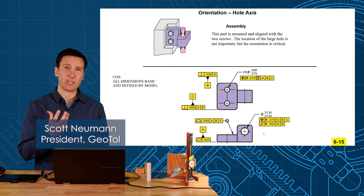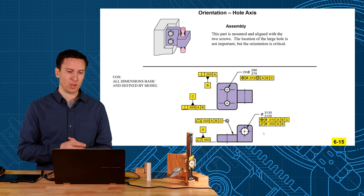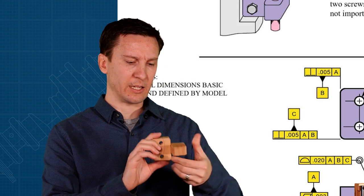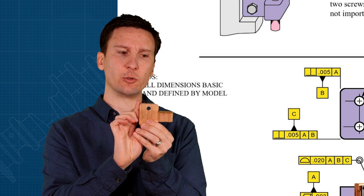This section will focus on orientation tolerances applied to features of size like a hole or a pin. In this example I have a hinge and how it mounts in the assembly is against the back face and along these two edges.